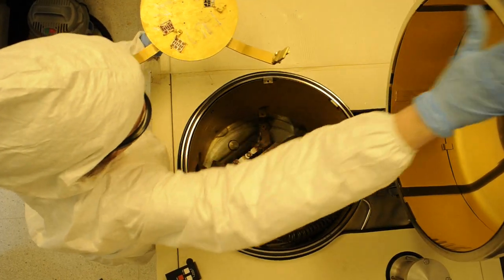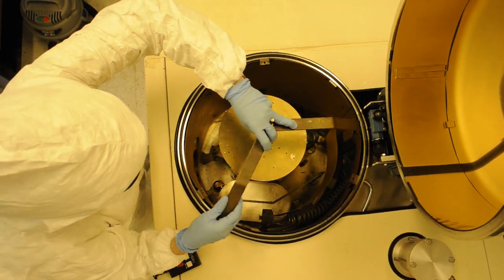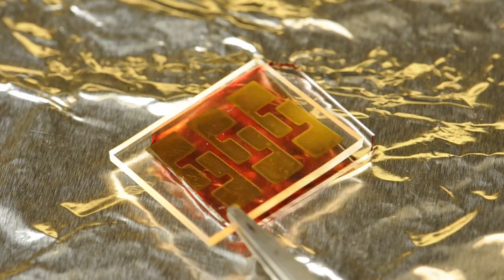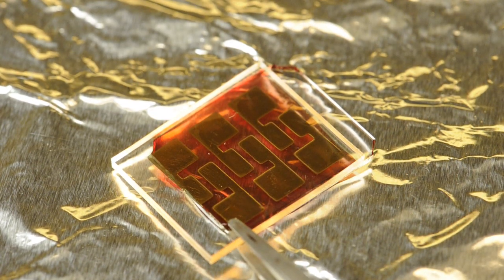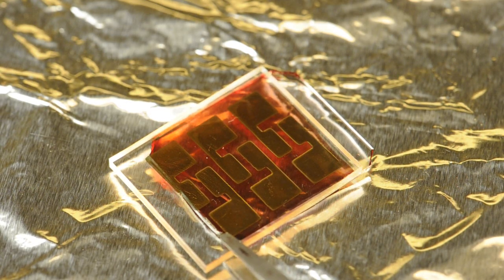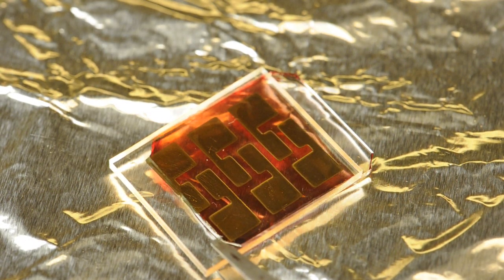After the placement of the mask, we put the sample in the gold evaporator. Alternatively, we can evaporate gold electrodes on a clear silicone rubber stamp and laminate the rubber stamp onto the polymer film to make our devices.